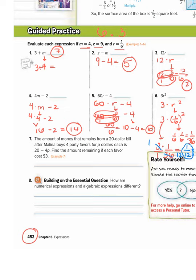Okay, so the party favors are P dollars each. So they're saying if the party favors are $3 each, they're saying P is equal to 3. So they want us to evaluate this expression, 20 minus 4P, if P equals 3.